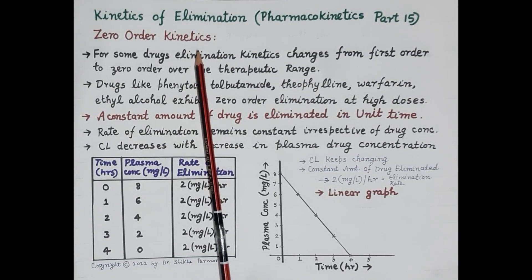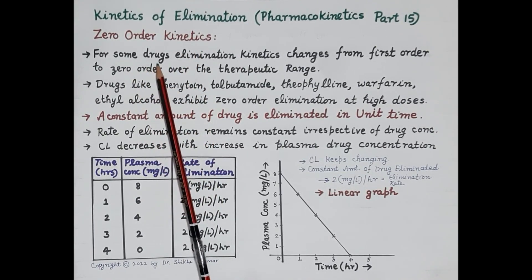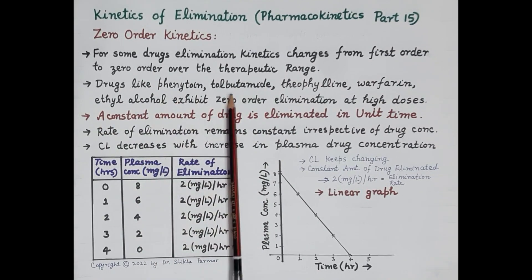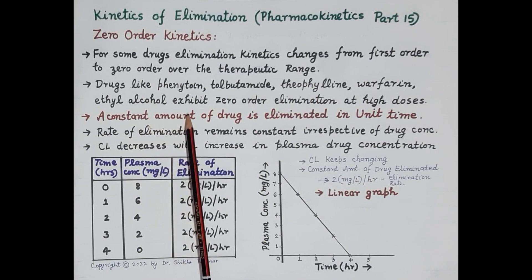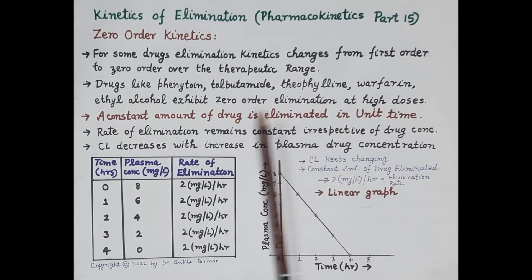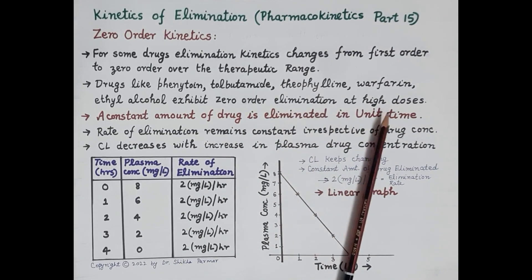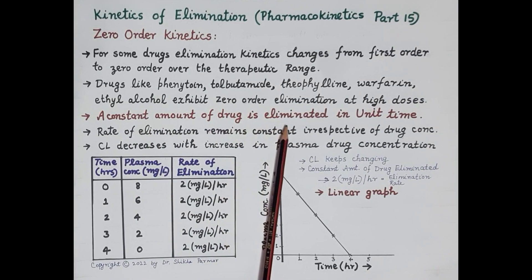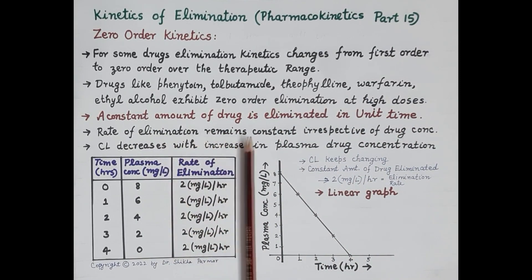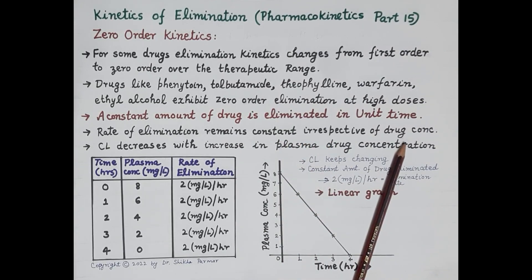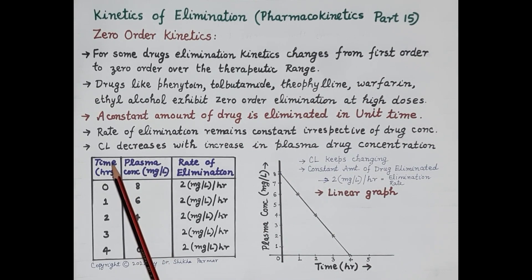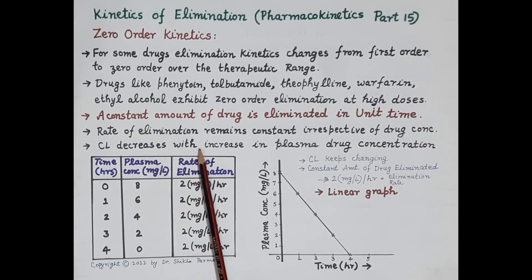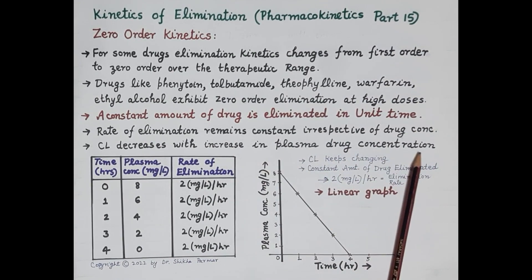Now let's talk about zero order kinetics of elimination of drugs. For some drugs, elimination kinetics changes from first order to zero order over the therapeutic range. Drugs like phenytoin, tolbutamide, theophyllin, warfarin, and ethyl alcohol exhibit zero order elimination at high doses. In zero order kinetics, a constant amount of drug is eliminated in unit time. Therefore, the rate of elimination remains constant irrespective of drug concentration. Apart from this, clearance decreases — clearance does not remain constant; it decreases with increase in plasma drug concentration, meaning elimination decreases with increasing concentration. Therefore, these drugs can cause toxicity.